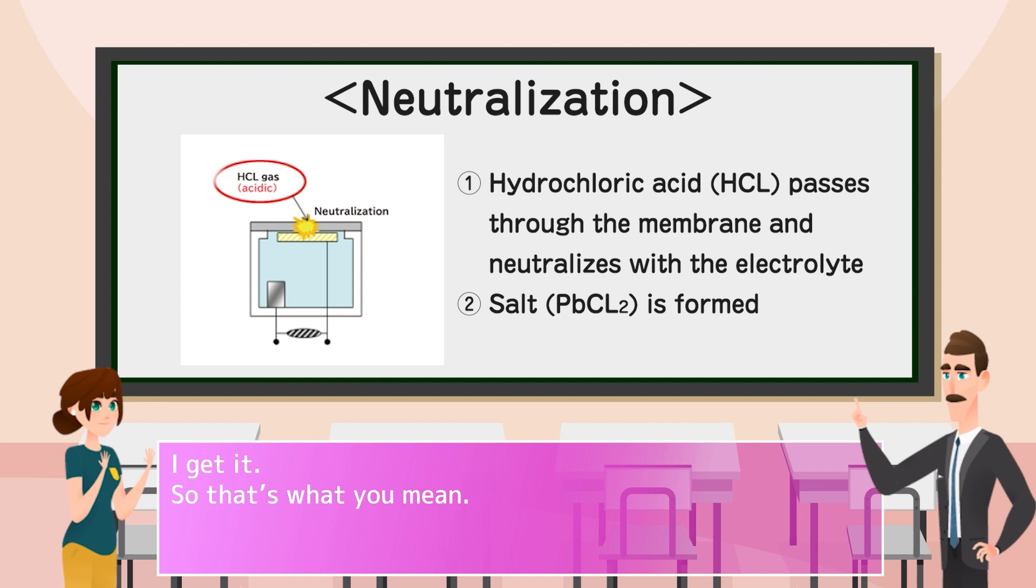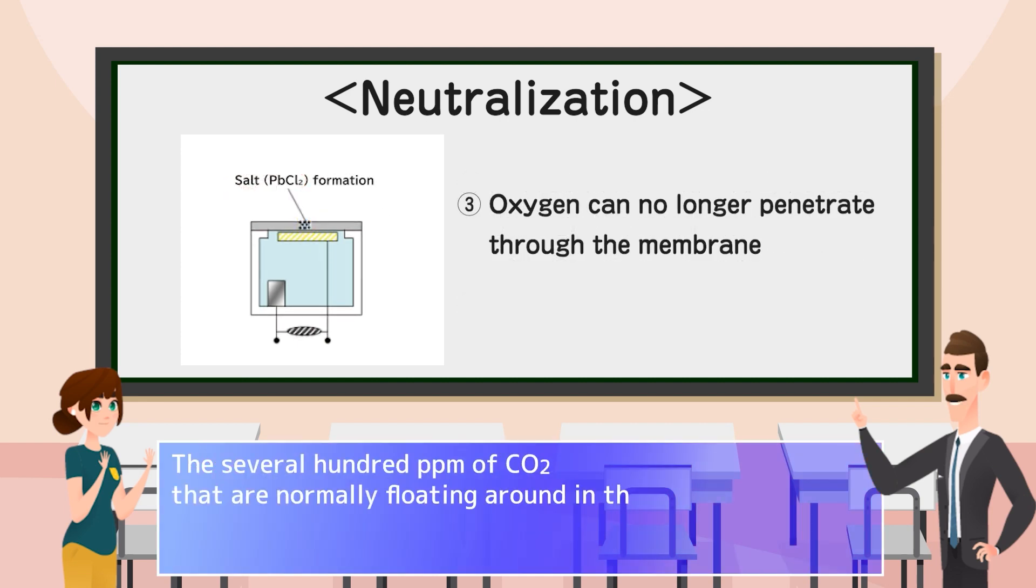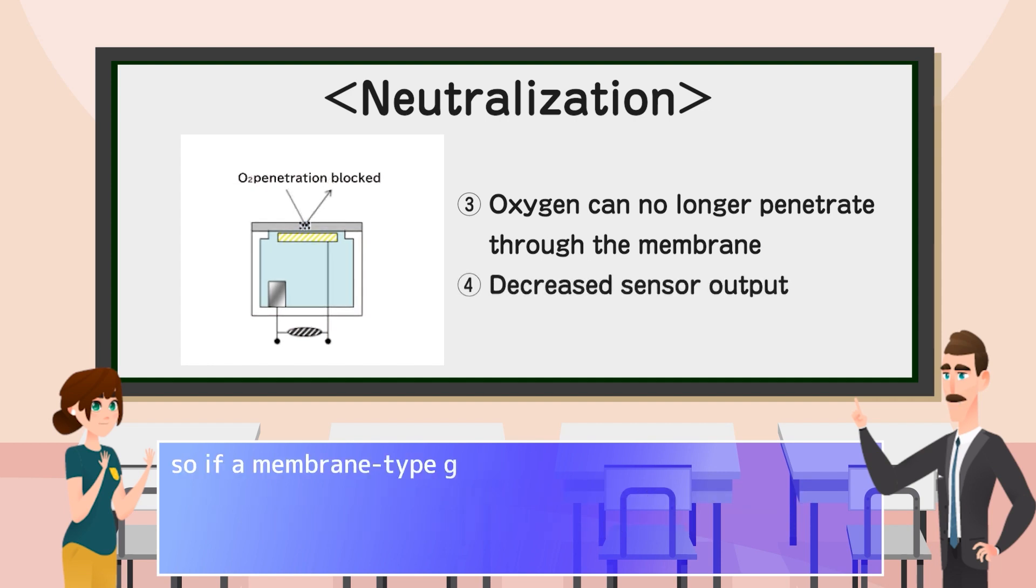I get it. So that's what you mean. The several hundred ppm of CO2 that are normally floating around in the atmosphere are, while weak, actually gas with acidic properties. So if a membrane-type galvanic cell method sensor were to be used in a location where the concentration of CO2 is consistently several dozen percent, the sensor sensitivity would decrease within a few months.